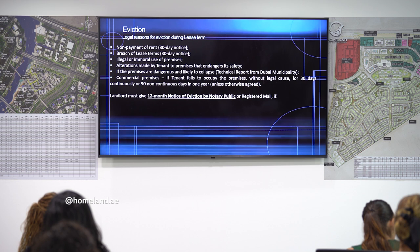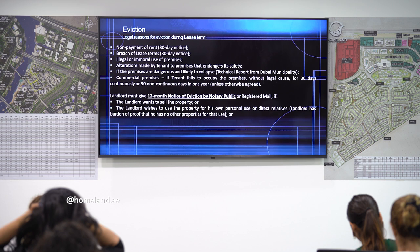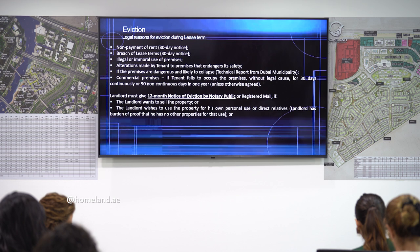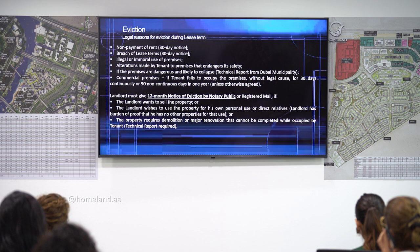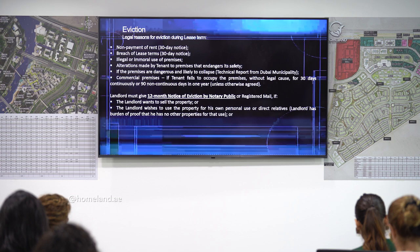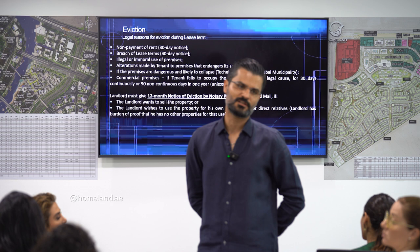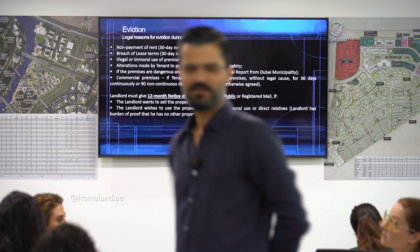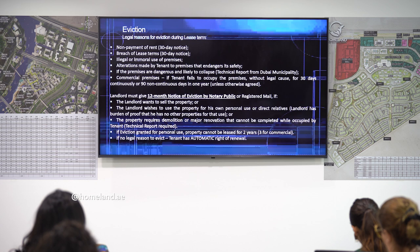The landlord must give a 12-month notice. If the landlord wants the tenant to leave because the landlord wants to sell the property or use it personally or for direct relatives, the landlord must give a 12-month notice through the notary public. The process: the landlord takes documents to the notary public, the notice is generated there, and then delivered through the Aramex Al Barsha office — the only Aramex office that delivers official documents — paying 105 AED for delivery. If there are no legal reasons for eviction, the tenant has the automatic right of renewal.